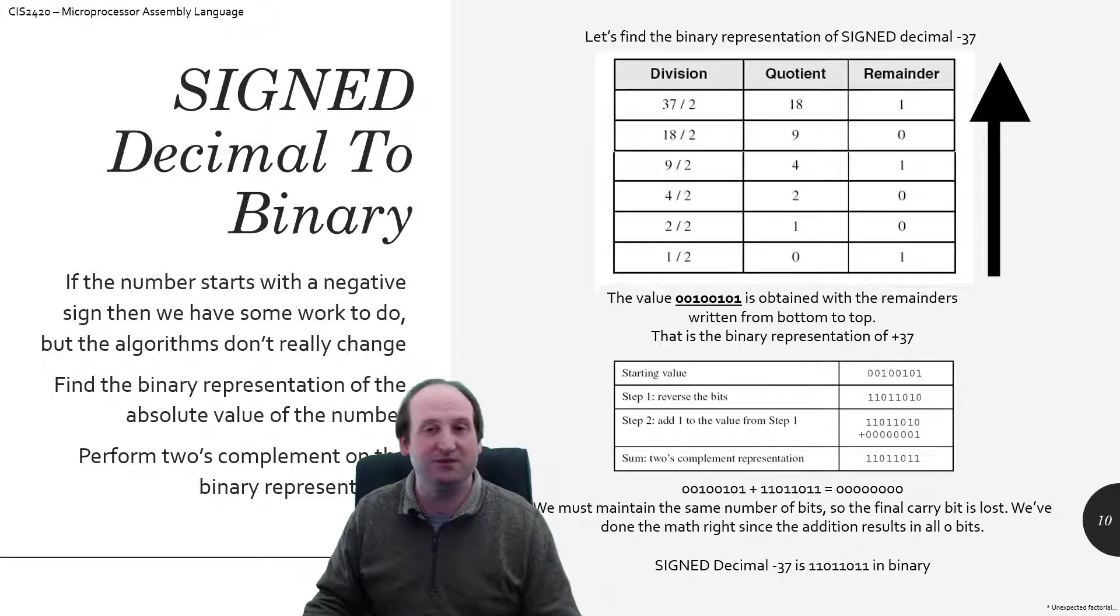We sanity check the thing, we took our positive 37, we turned it negative, and so that way our negative 37 in binary is exactly that, 11011011.